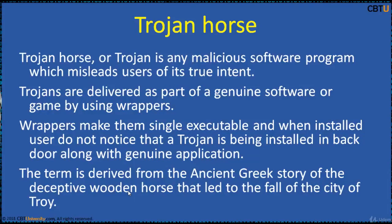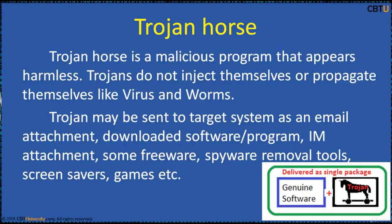Ransomware attacks are often carried out using a Trojan. Unlike viruses and worms, Trojans do not propagate themselves. Trojans are generally spread by some form of social engineering, like attempting to open an email attachment disguised to be unsuspicious, or by fake downloads.